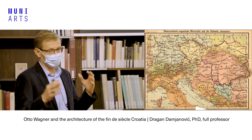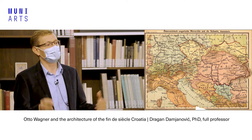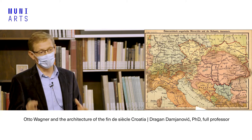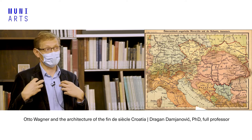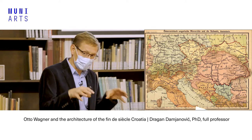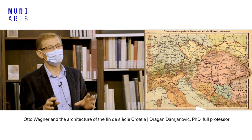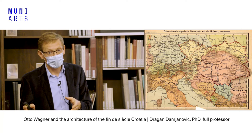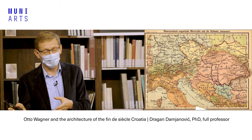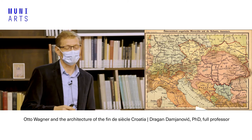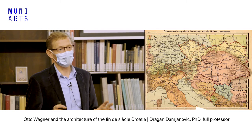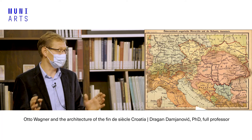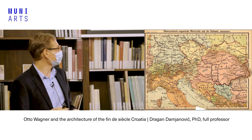In general, Croatia belonged to the underdeveloped parts of the monarchy — not like the Czech lands, upper Austria, or the region around Budapest, which were the economic centers. This economic backwardness heavily influenced the situation in architecture. You couldn't find a city with more than 100,000 people in Croatia in the period. The biggest city was Zagreb, which according to the 1910 census had around 80,000 people — about 2.5 times smaller than Brno at the same period.